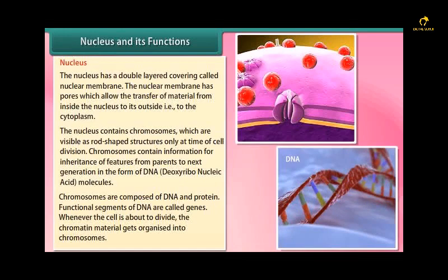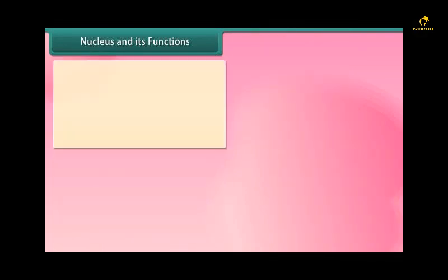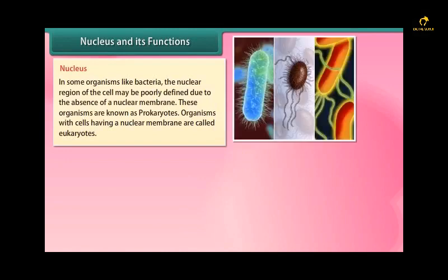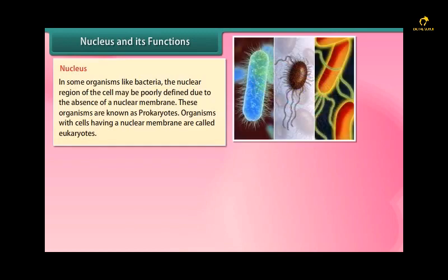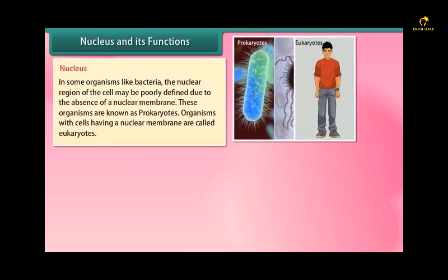Functional segments of DNA are called genes. In eukaryotes, whenever the cell is about to divide, the chromatin material gets organized into chromosomes. In some organisms like bacteria, the nuclear region of the cell may be poorly defined due to the absence of a nuclear membrane. These organisms are known as prokaryotes. Organisms with cells having a nuclear membrane are called eukaryotes.